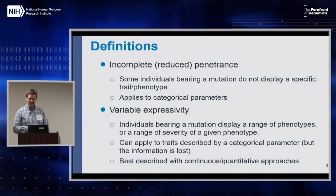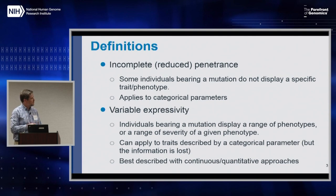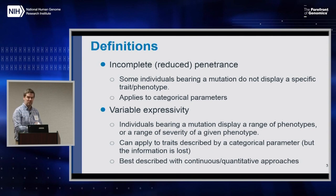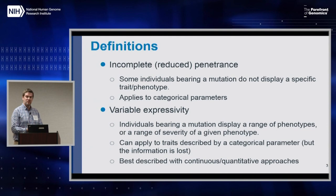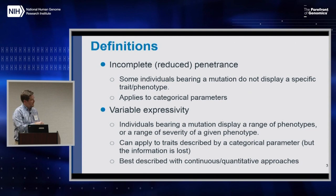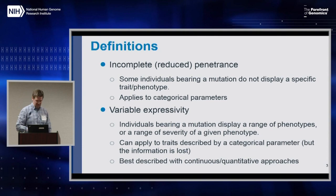I made this slide to define these terms so we're all on the same page. When we speak of incomplete or reduced penetrance, we're speaking about cases where individuals bearing a mutation do not display a specific trait — it's a binary, yes-or-no trait, and it typically applies to categorical variables: something is either in the bucket or it's not. When we speak of variable expressivity, these are individuals bearing the mutation who have a range of phenotypes or a range of severity for that given phenotype. We lose nuance by putting them into categorical buckets, and this is best described with quantitative or continuous trait approaches.